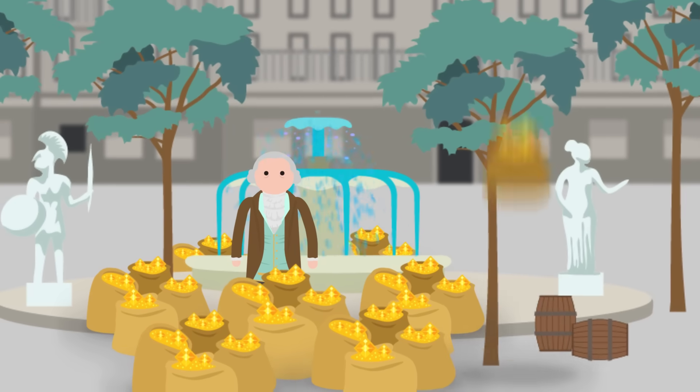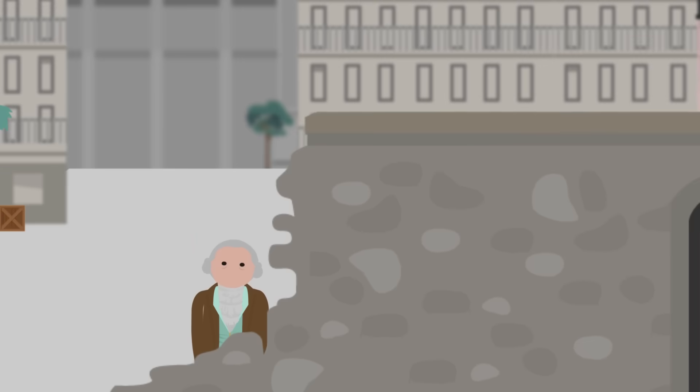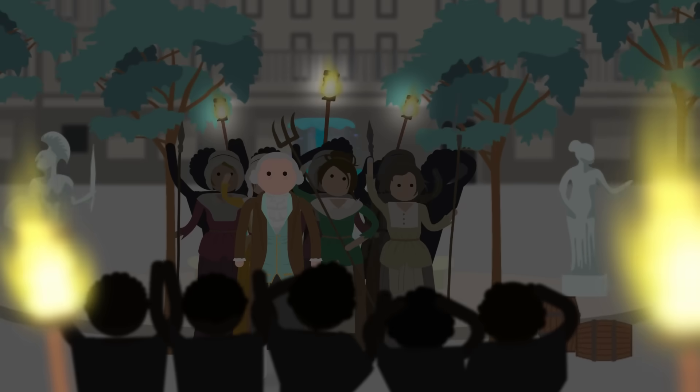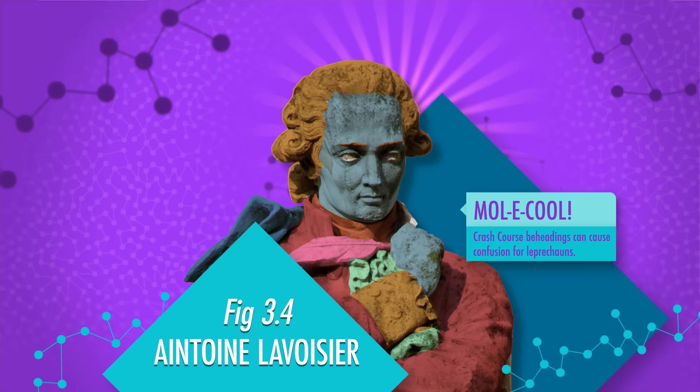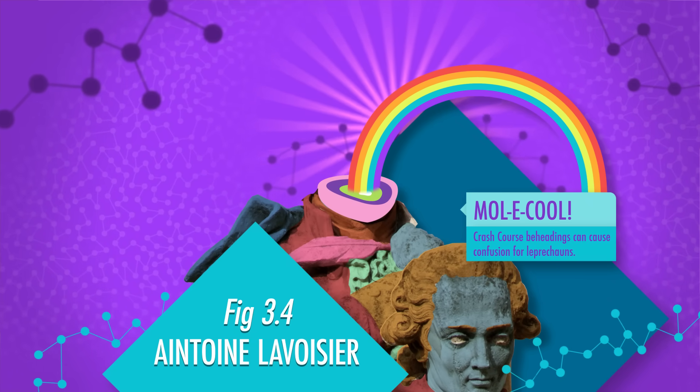Lavoisier the man was a bit of a dichotomy, having worked as a tax collector, and helping to create a literal wall around Paris to assist in the collection of taxes, but also a supporter of the French Revolution as it began. But the enemies he had made with his wall, and by denying certain powerful politicians' entry into the French Academy of Sciences, eventually caught up with him. As the revolution's lunacy increased, he was beheaded on May 8th, 1794.